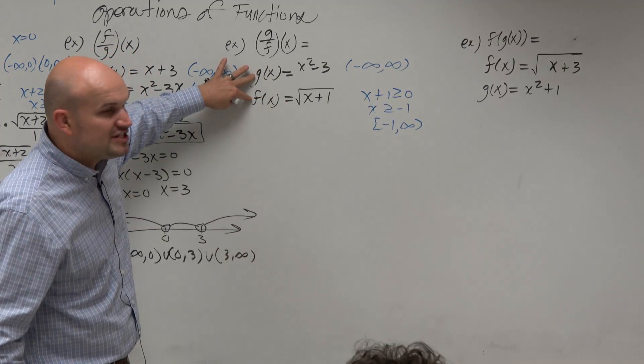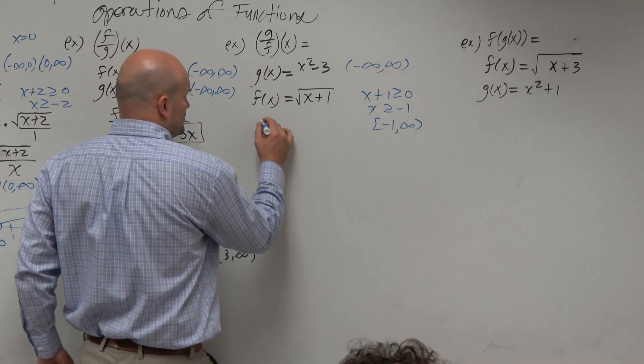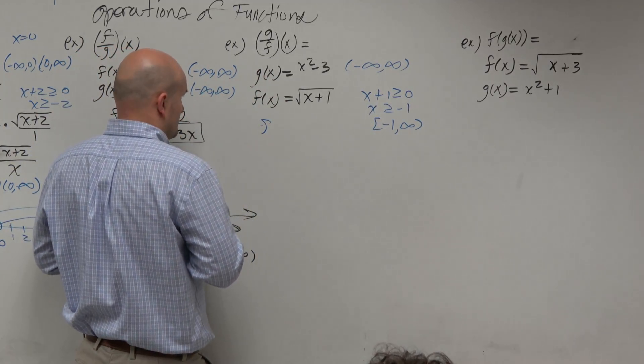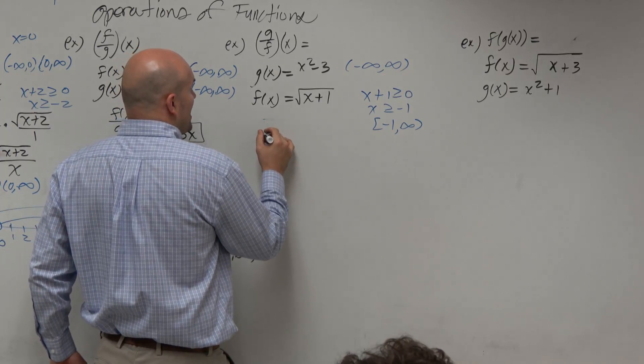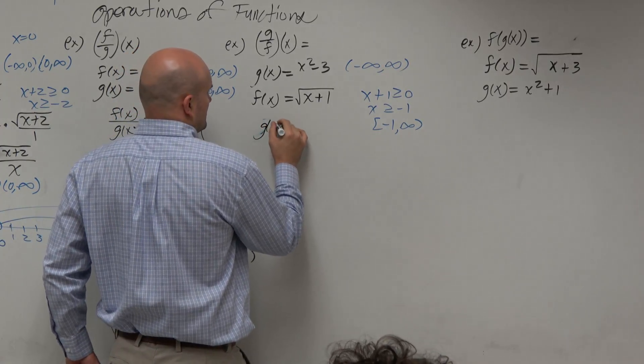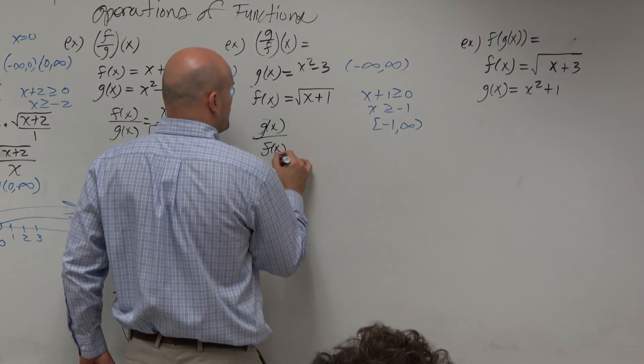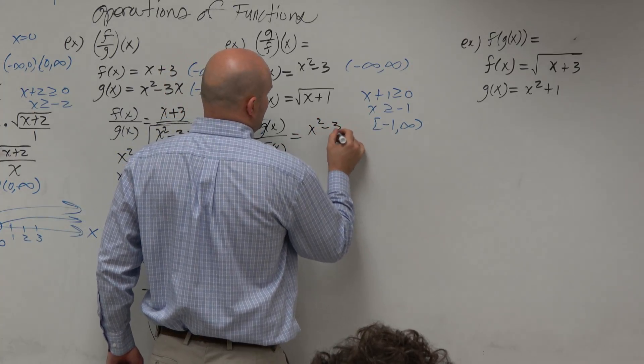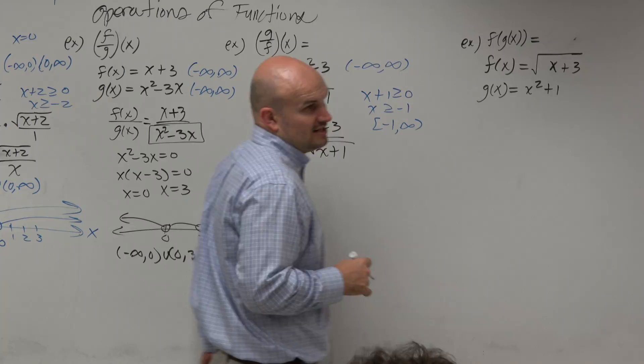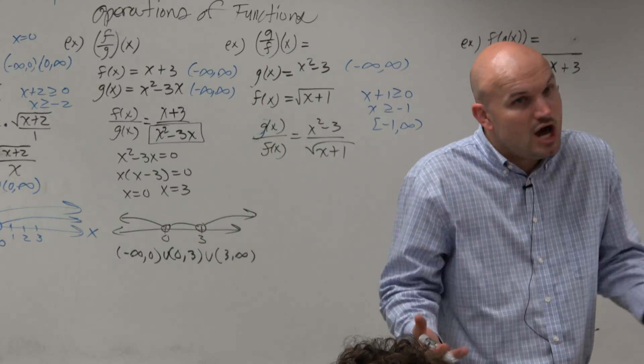But when I apply division of these two products, or these two functions, I have a problem with that. Because where am I now putting this function? In the denominator. And can the denominator be equal to 0? No.